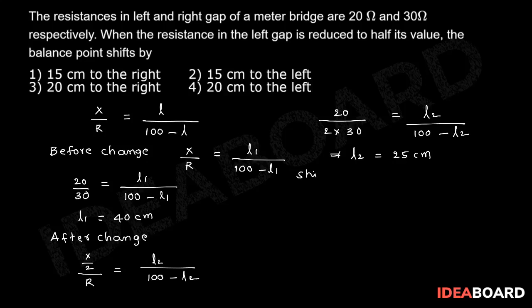They're asking for the shift in the balance position. Delta L equals L1 minus L2. That is delta L equals 40 minus 25 centimeter. So delta L equals 15 centimeter to the left.